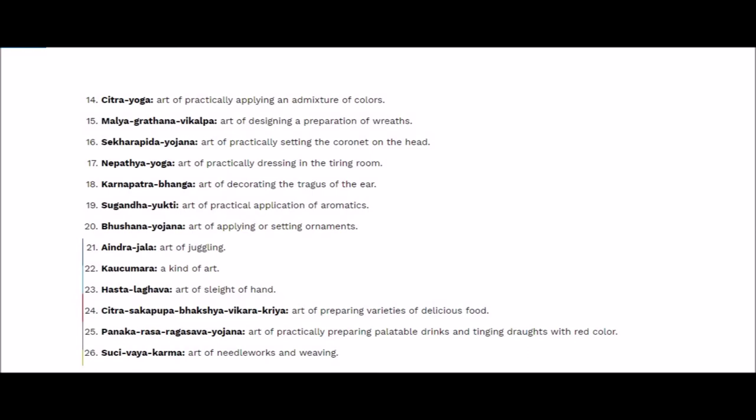In traditional schools there was great importance given to enacting the role of a king or god — the Mukut had to be taken care of in a very pious manner through Shekharapira Yojana. Nepathya Yoga is the art of practically dressing in the tiring room, which we call the green room. Sugandha Yukti is the art of practical application of aromatics — perfumes and deodorants. In earlier days, Chandan, rose, and jasmine each had different Sugandha. Then Bhushana Yojana, the art of applying and setting ornaments on arms, neck, and for females.